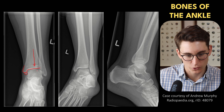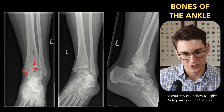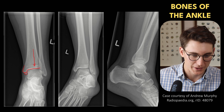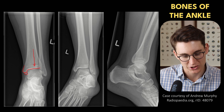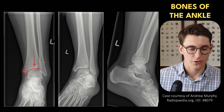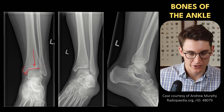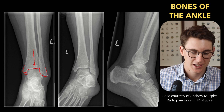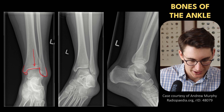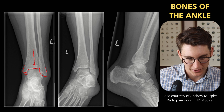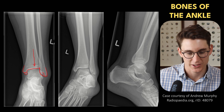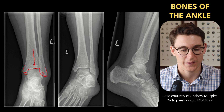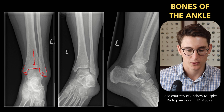Our tibial plafond forms an articular surface with the superior surface of our talus, and our medial malleolus makes this medial articular surface. Our fibula also has an inferior and lateral projection known as our lateral malleolus. This is our articular surface of the fibula, and we've got a ligamentous surface here — this little scalloped portion of the fibula where the ligaments attach — and we're going to look at that on our MRI talk.